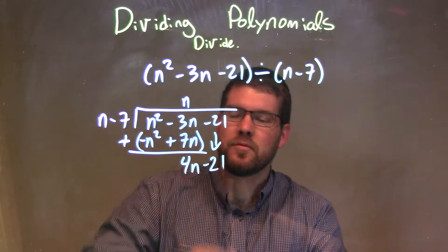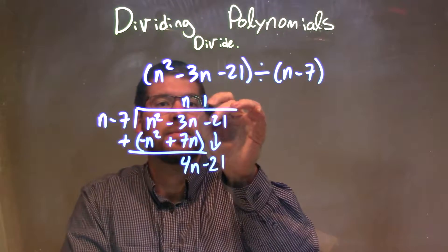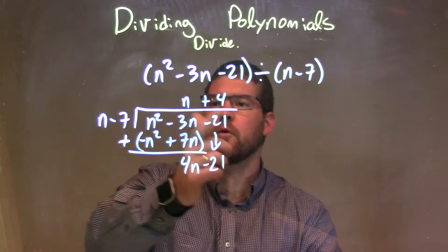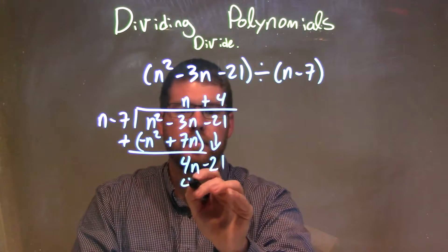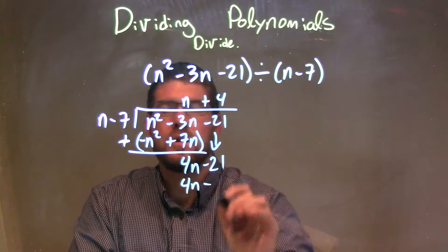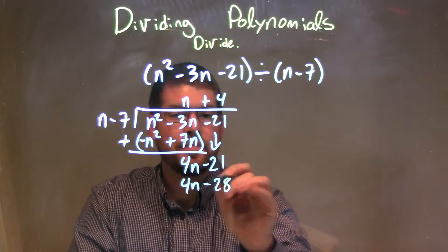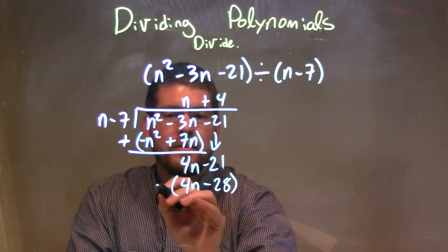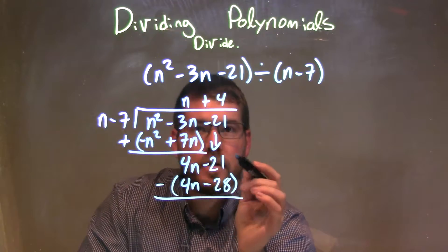What times n gives me 4n, that's a positive 4, so we add a 4 here. 4 times n is 4n, and 4 times minus 7 is minus 28, okay? But now we need to subtract the two.